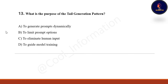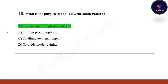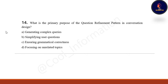Next question: What is the purpose of the tail generation pattern? Option A: to generate prompts dynamically. Option B: to limit prompts. Option C: to eliminate human input. Option D: to guide model training. Correct option is A — to generate prompts dynamically.